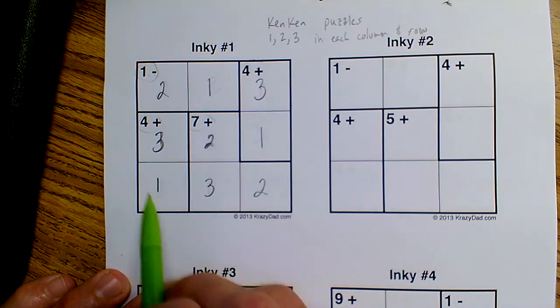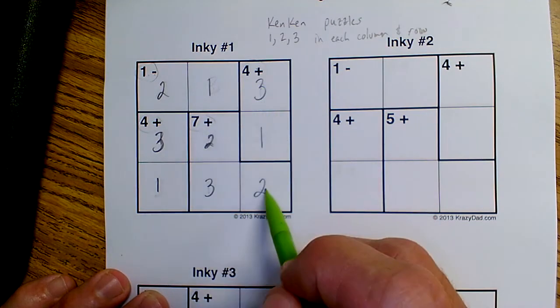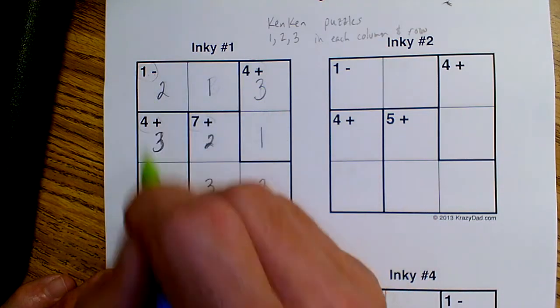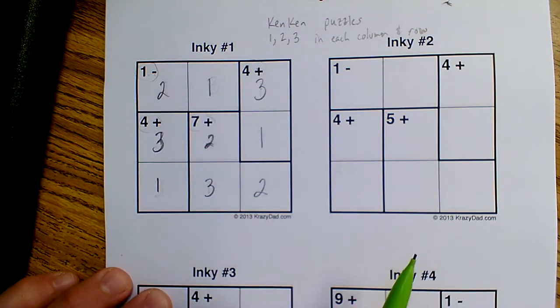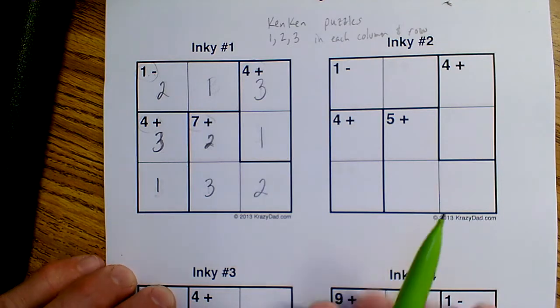Checking each row and column: 2, 1, 3. 1, 2, 3. 1, 3, 2. And we have gotten it. This is how you do Ken Ken puzzles.